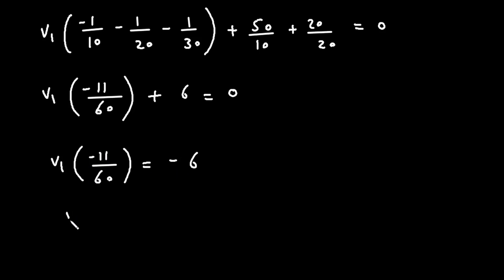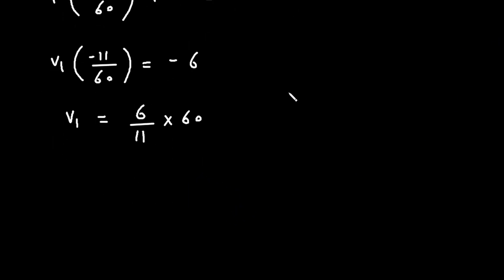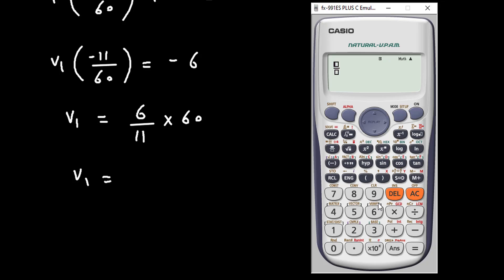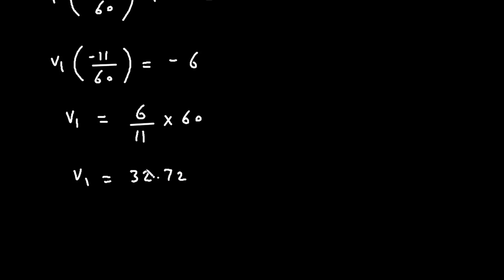The two negatives cancel, so V1 equals 6 multiplied by 60, divided by 11. Solving this: 6 divided by 11 multiplied by 60 equals 32.72 volts. We have now found the answer for V1.